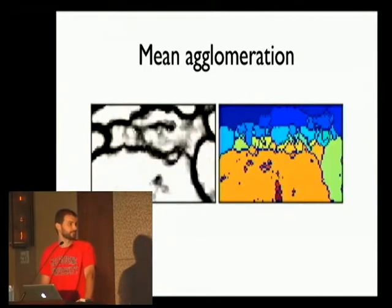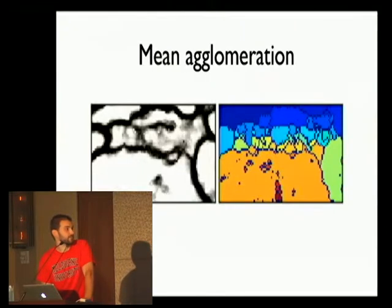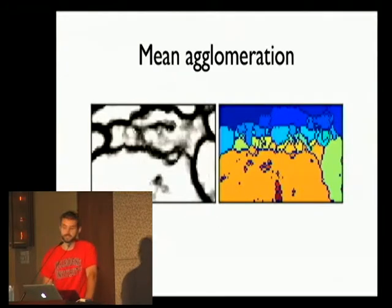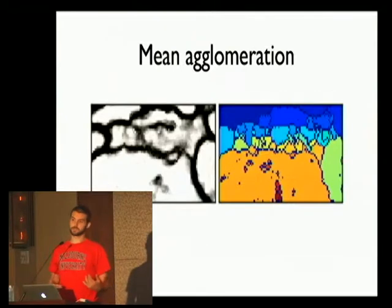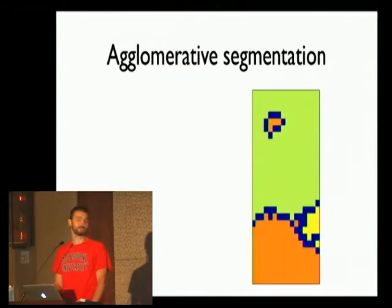One of the most common strategies for agglomeration is mean agglomeration. Given a probability map on the left, you do the over-segmentation on the right. All of this is one cell here, but over here it's vastly over-segmented. What you want to do is start merging these segments one by one. The thing with mean agglomeration is that as you merge two segments, the boundary between the new segment and adjacent ones becomes longer, giving you a better estimate of the mean — which means the mean is going to do pretty well.